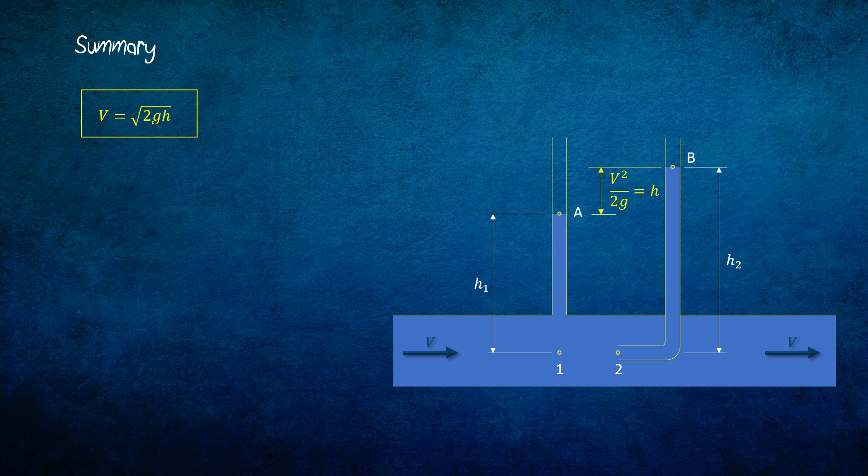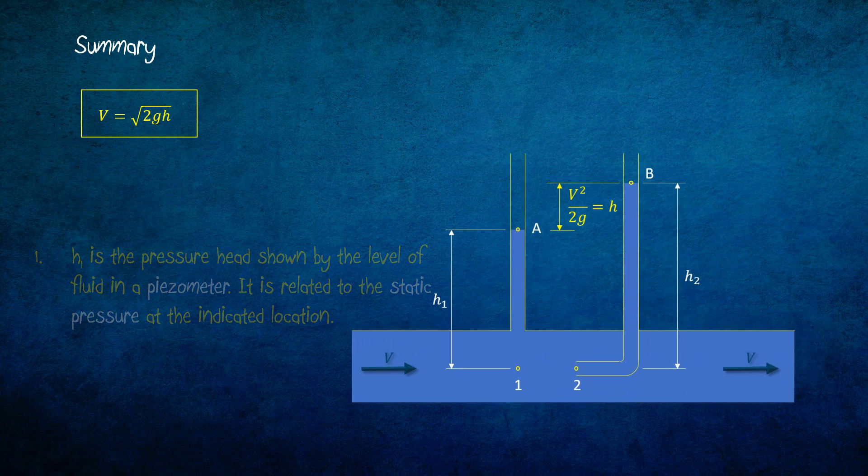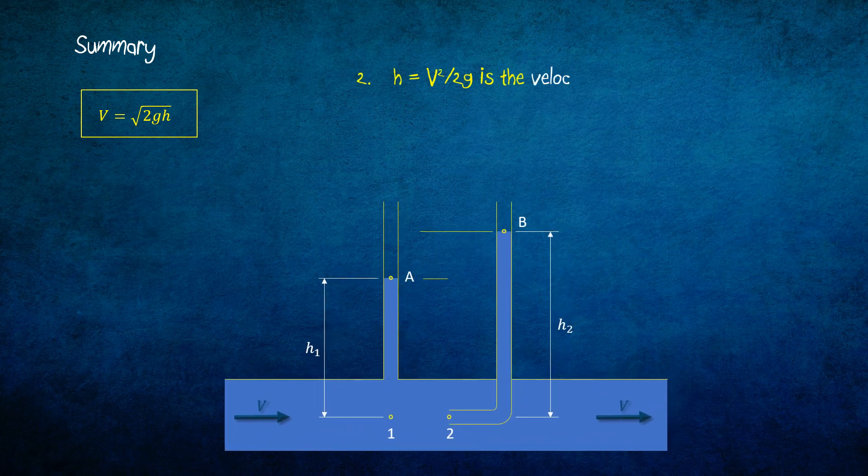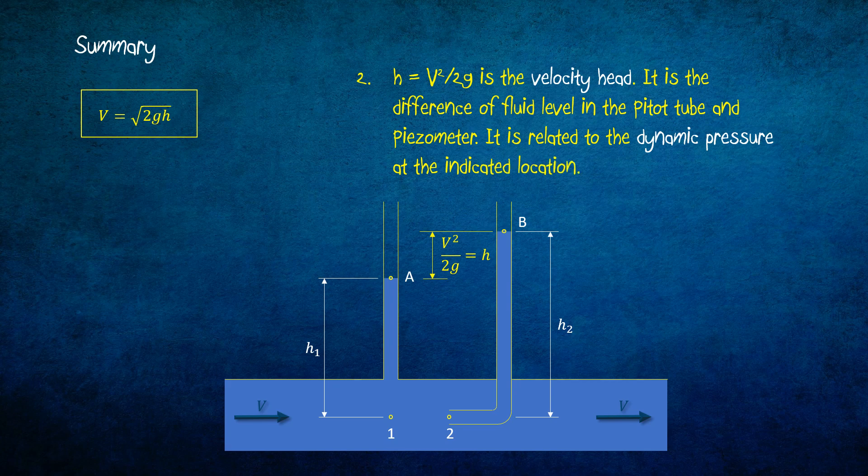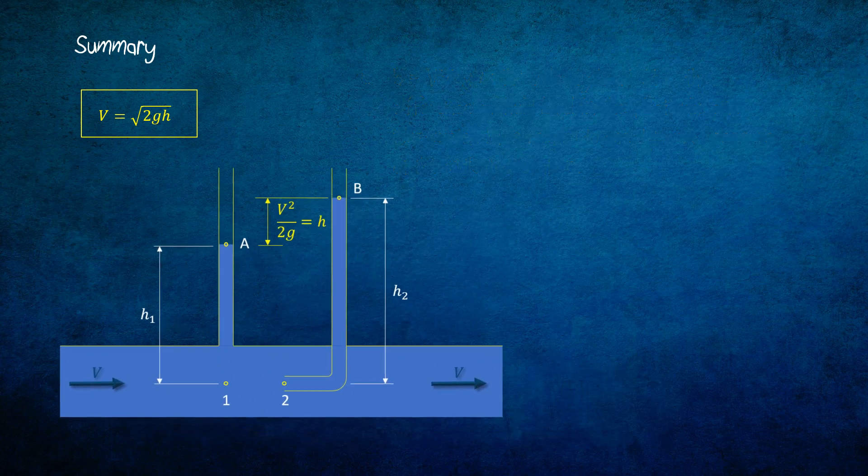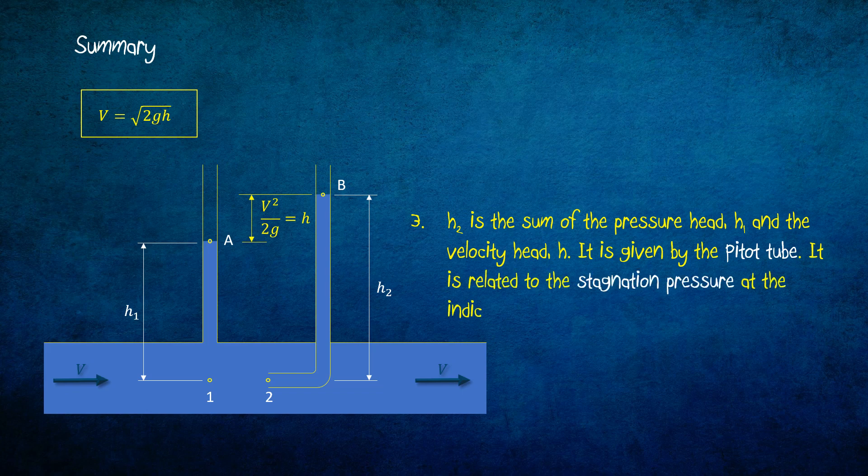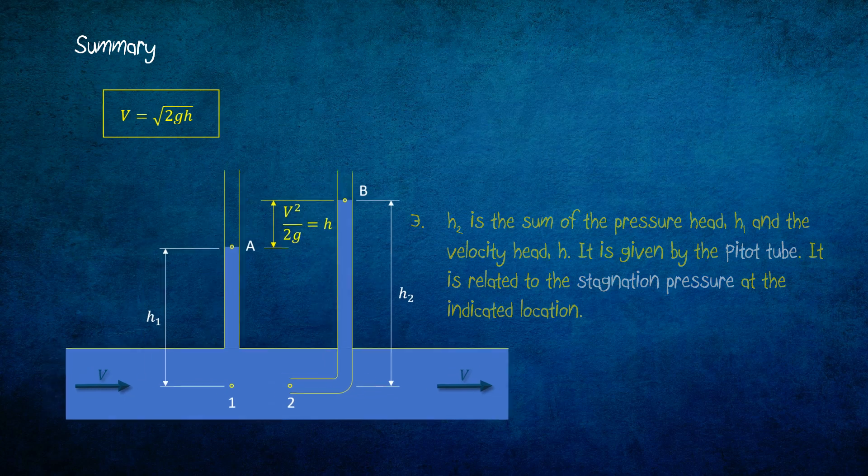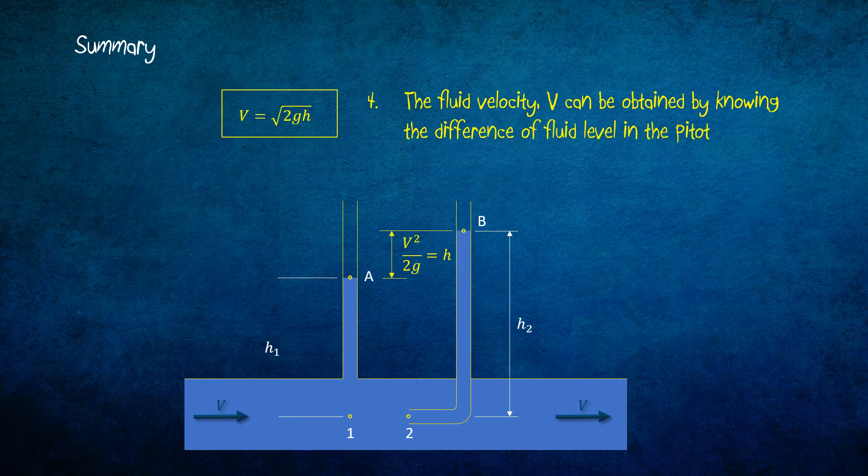Let's summarize. H1 is the pressure head shown by the level of fluid in a piezometer. It is related to the static pressure at the indicated location. H equals V squared over 2g is the velocity head. It is the difference of fluid level in the pitot tube and piezometer. It is related to the dynamic pressure at the indicated location. H2 is the sum of the pressure head H1 and the velocity head H. It is given by the pitot tube and is related to the stagnation pressure at the indicated location. The fluid velocity V can be obtained by knowing the difference of fluid level in the pitot tube and piezometer H.